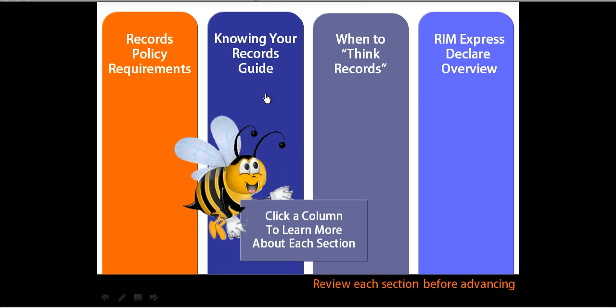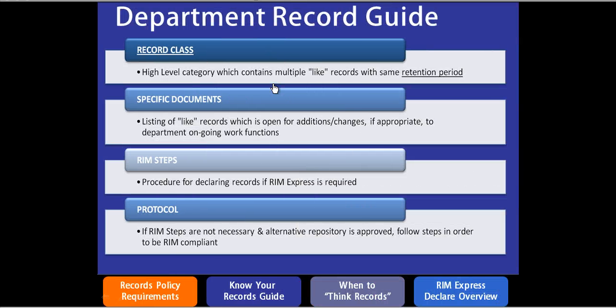The user can now click on one of the columns to go to one of the training areas. So if I click on 'Knowing Your Records' it's going to take me to that slide. At this point the learner will be in control — they can decide which slides they want to view first, which topics they want to view first. They decide on the order, which makes this non-linear.